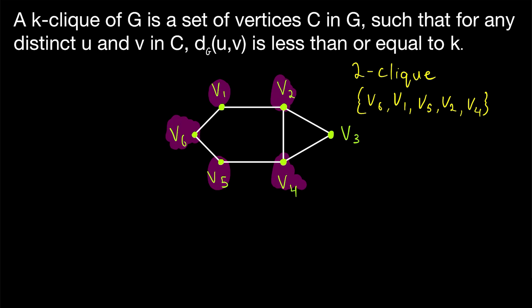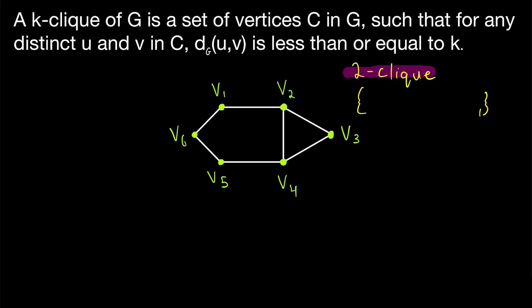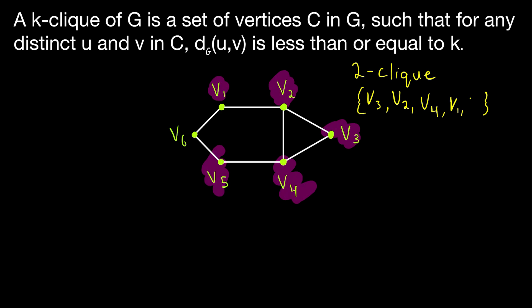We'll quickly take a look at one more two-click to make the final point of this lesson. Consider another two-click in this graph that perhaps we begin with the vertex v3. We can include v2 and v4 in this two-click with v3 since the distances between any two of these vertices is less than or equal to two. Similarly, we can include the vertices v1 and v5 in the two-click as well. The distances between any two of these vertices in the two-click are all less than or equal to two. For example, the distance between v5 and v1 is equal to two. We can get from v5 to v1 by going to v6 and then to v1. So that's a shortest path of length two.